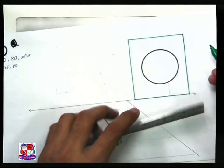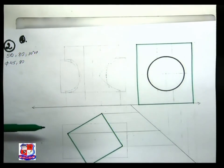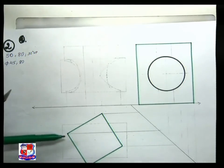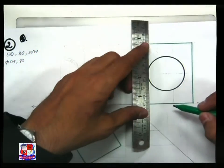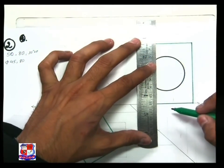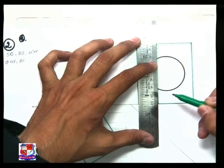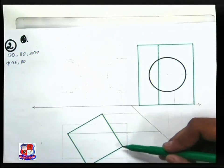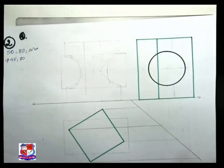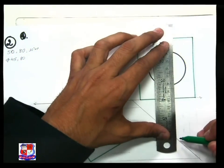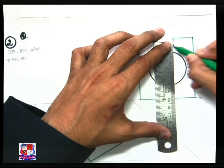The height should be 80 millimeter — this is the side view. Looking from this direction, this corner would be visible, so it should be drawn with a full line. This corner is fully visible so it is drawn with a full line. Looking from this direction, this other corner will not be visible, so it is represented by a dotted line.